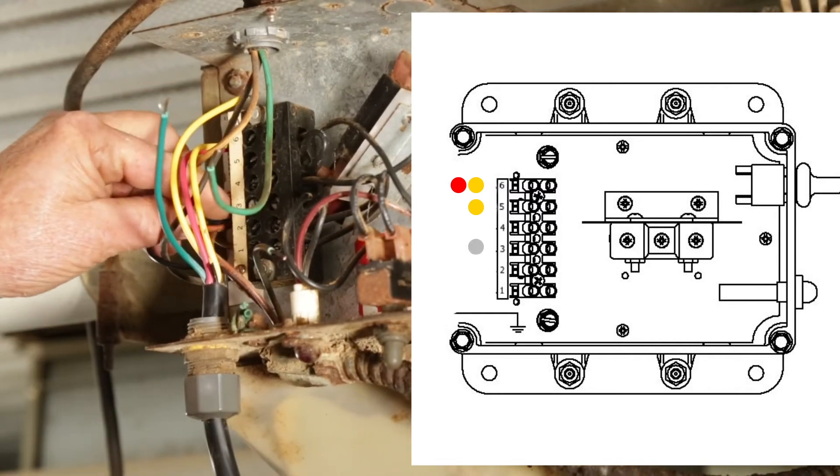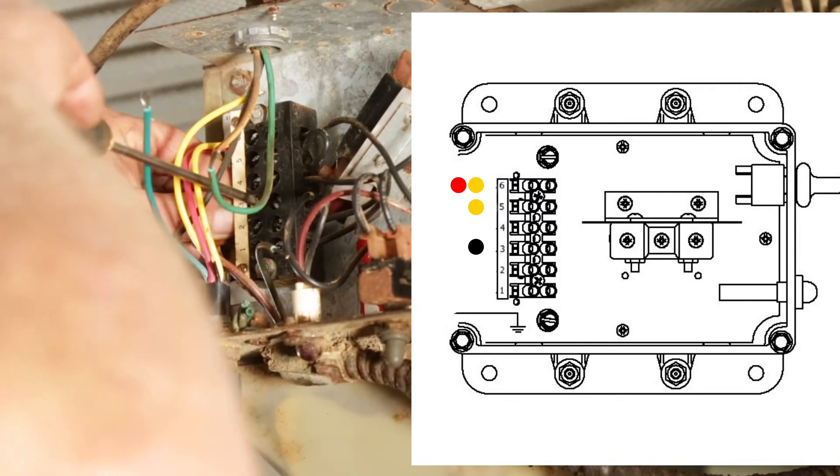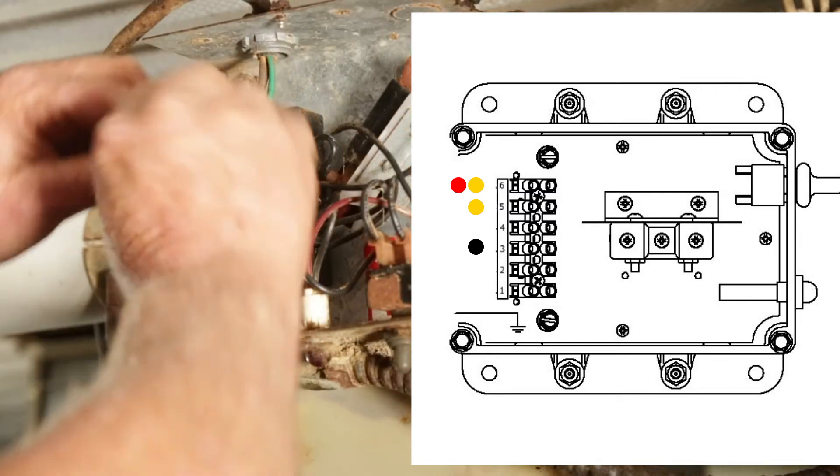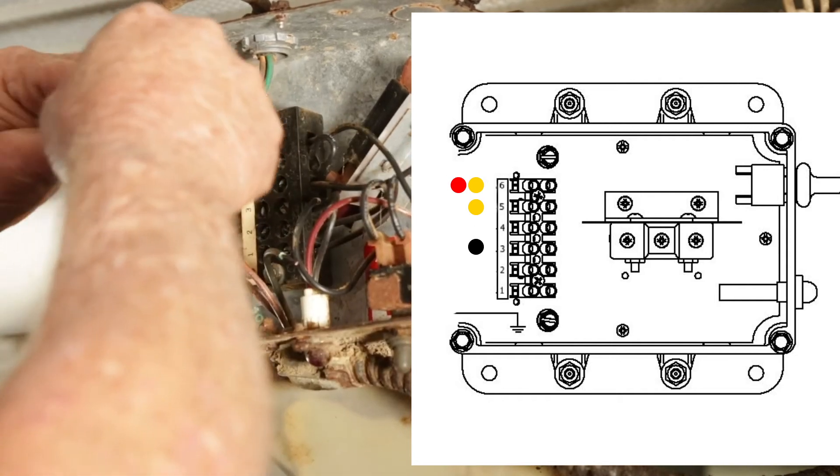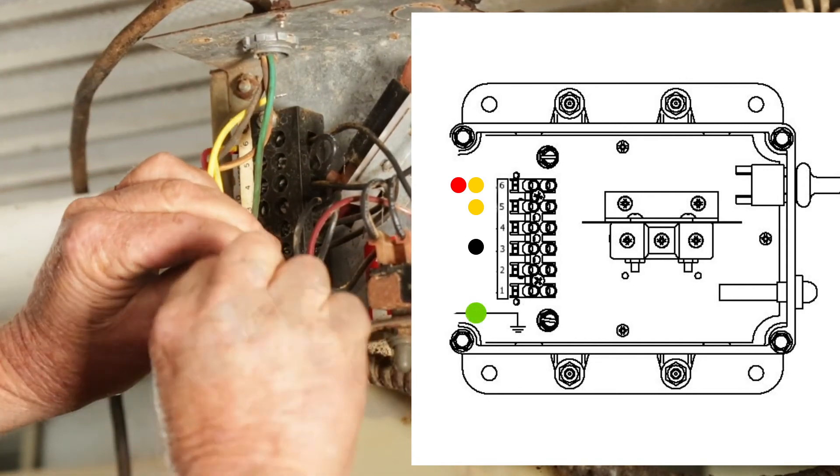Connect a black wire from the HS820 to the number 3 slot on the chore time terminal. Last, conjoin the green wire from the HS820 to the green ground wire of the chore time control box and cap them with a wire connector.